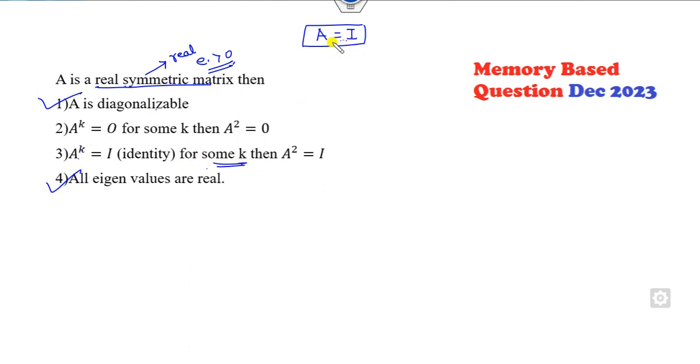A is any real symmetric matrix. If I choose A = I, then A^k exists for some k - yes, it's obvious for all k. Then A² = I - definitely correct. A^k = 0 - what does it mean? It means it's a nilpotent matrix. Once it's nilpotent, all eigenvalues are zero.